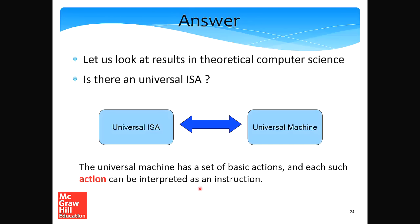We want a universal ISA — one that can implement all programs known to mankind. This is the same as implementing a universal machine. The universal machine has a set of basic actions, and each such basic action can be interpreted as an instruction. An instruction is an action: when you ask the processor to add two numbers, you're asking it to do an action. So a universal ISA and a universal machine pretty much mean the same thing.